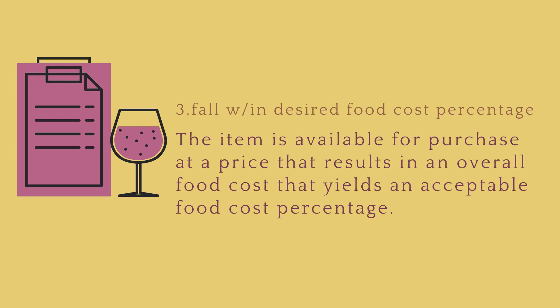Number three: does the food cost fall within the desired food cost percentage? The item should be available for purchase at a price that results in an overall food cost yielding an acceptable food cost percentage. Food cost percentage is calculated by taking the cost of goods sold and dividing it by the revenue or sales generated from the finished dish. Cost of goods sold is the amount of money spent on ingredients.